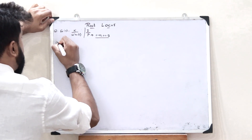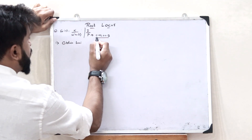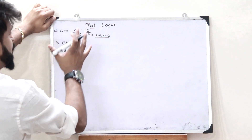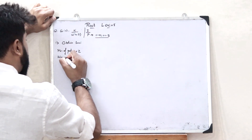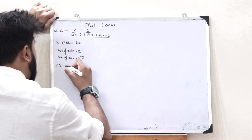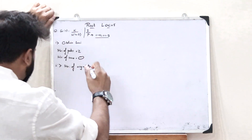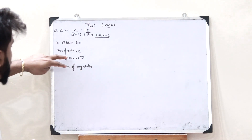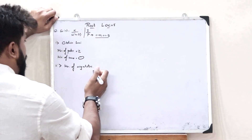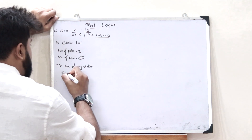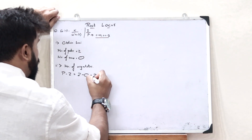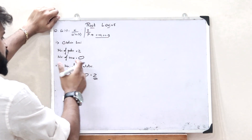Step 1 is obtaining the loci. We have two poles, so the number of poles P=2, and we have no zeros, so Z=0. In Step 2 we find the number of asymptotes. The number of asymptotes is given by P minus Z, which is 2 minus 0, equal to 2. So there are two asymptotes.